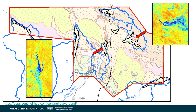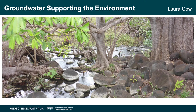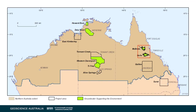We now move to how Exploring for the Future projects provide greater understanding towards groundwater for the environment in northern Australia. My name is Laura Gow. Water allocated and managed specifically to improve the health of rivers, wetlands, springs, floodplains and associated water-dependent flora and fauna is known as water for the environment. These water bodies and ecosystems play a vital role in sustaining healthy communities and economies and have great cultural and spiritual significance to Aboriginal people. I will use the McBride and Nullar Basalt provinces to illustrate how the program contributed towards understanding groundwater for the environment.